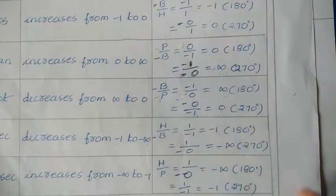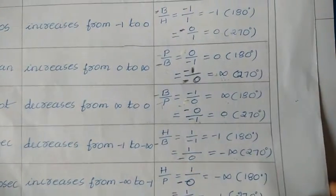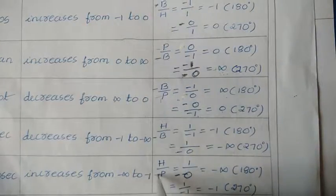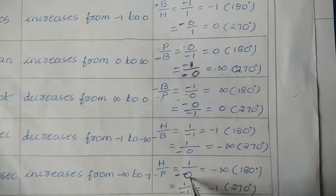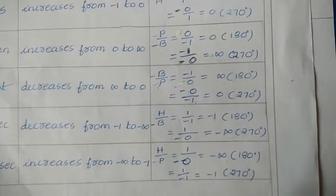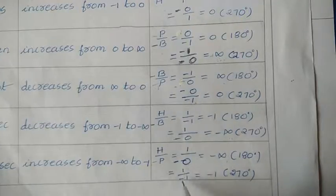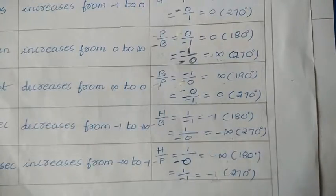Next, cosec is hypotenuse upon perpendicular. At 180 degrees, hypotenuse is 1 and perpendicular is 0, but it is on the negative y-axis, so 1 upon 0 gives infinity with a negative sign — that is minus infinity. For 270 degrees, hypotenuse is 1 and perpendicular is minus 1, so 1 upon minus 1 equals minus 1. So cosec value increases from minus infinity to minus 1.